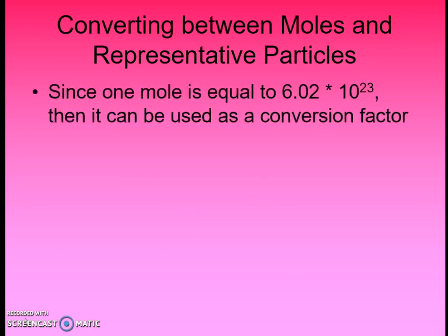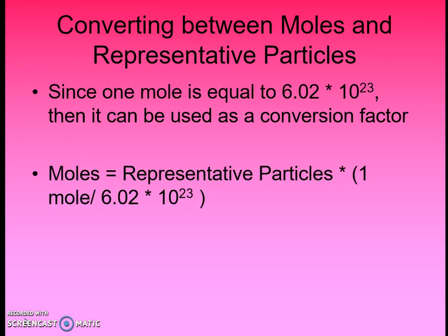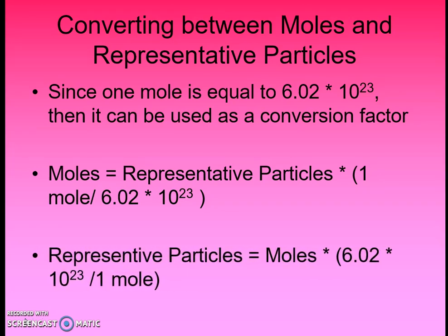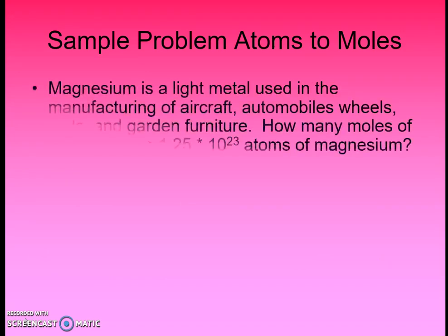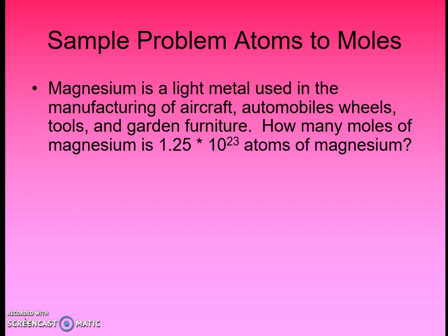One mole equals 6.02 times 10 to the 23rd of anything, so we can use that as a conversion factor in both directions. If we want to get to moles and we have representative particles, we use the conversion factor so representative particles cancel out, leaving us with moles. Or we can use the inverse to make moles cancel out, leaving us with representative particles. Here's an example going from atoms to moles, looking at magnesium — a metal often used in alloys because of how light it is and how it doesn't flake away when it oxidizes like iron does.